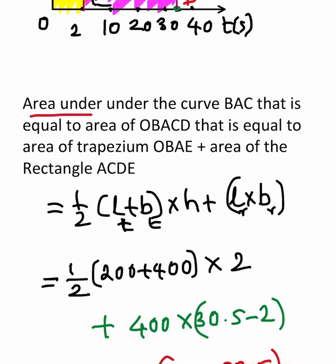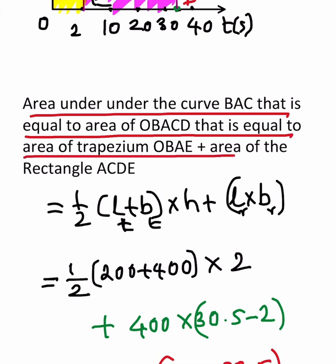That is area under the curve BAC equals area of OBACD, which equals area of the trapezium OBAE plus area of the rectangle ACDE. You know the formula for a trapezium: half (L plus B) into H, that is parallel sides L, B and H distance between them, and for a rectangle, length into breadth.